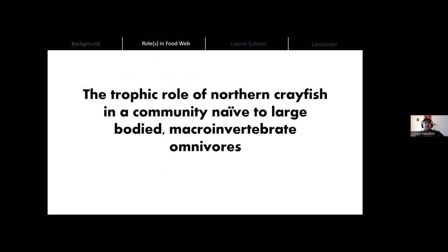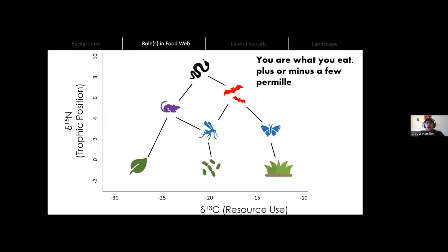When thinking about how crayfish might fit into food webs, I'm talking specifically about their resource use and their trophic position. The gist of stable isotope ecology is that you really are made up of what you eat, which is why stable isotopes work for understanding resource use and trophic positions in food webs. The units you'll see in these plots are called per mil units — they express the ratio of heavy to light isotopes that comprise the tissue sampled.